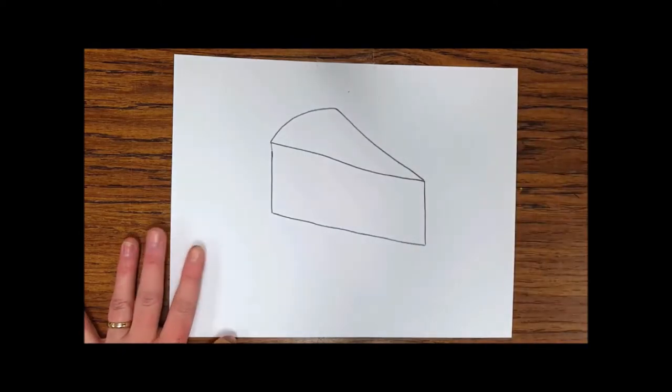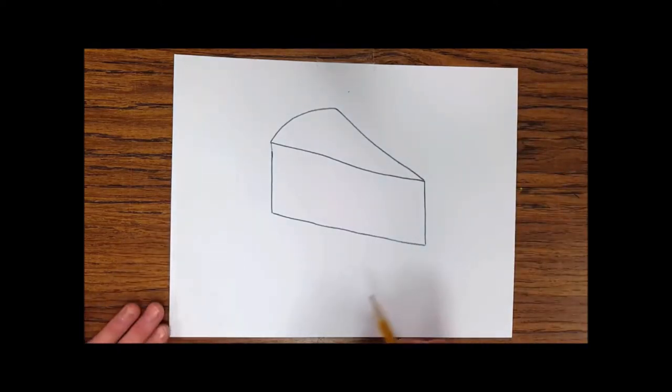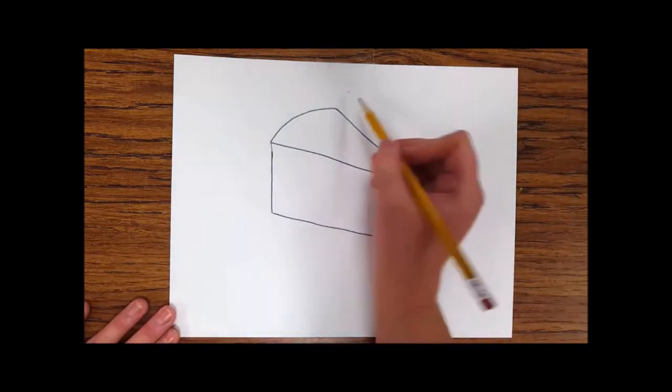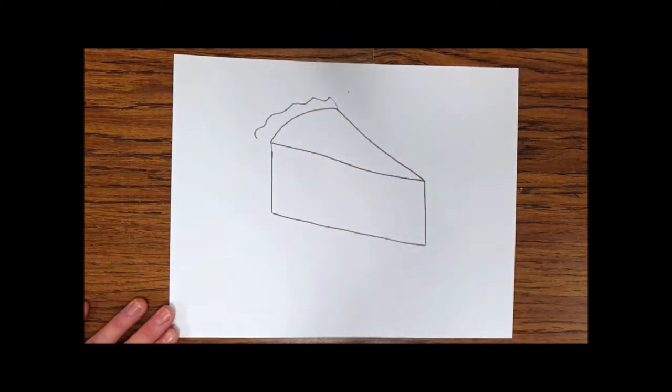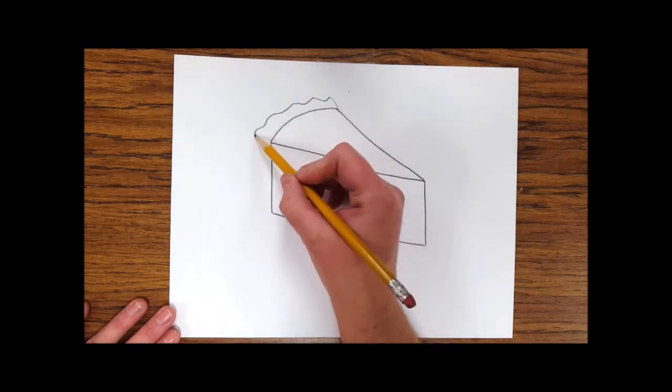We now have a pyramid shape for our slice. To add the crust, I'm going to make a wavy or curvy line that goes across the top. Then I'm going to pull it in a little and go straight down for the edge of my crust.